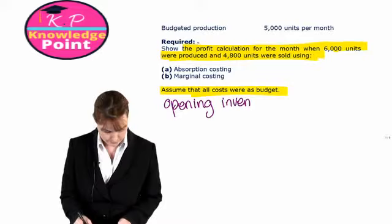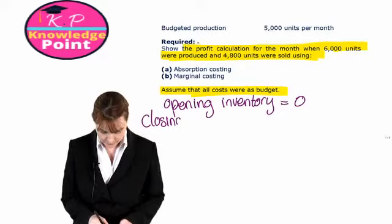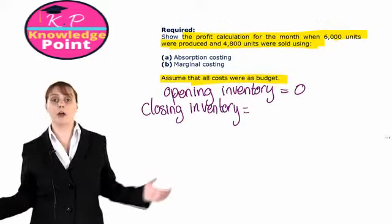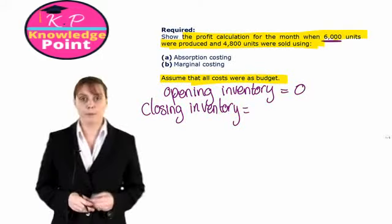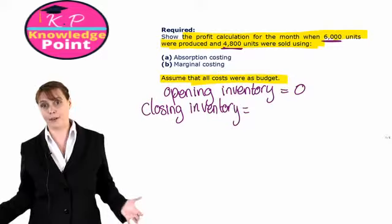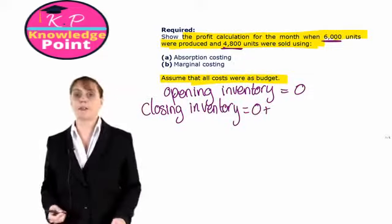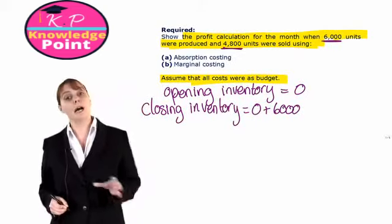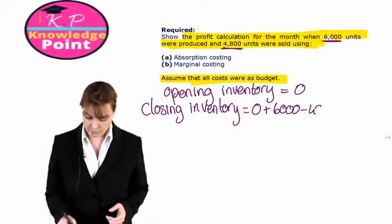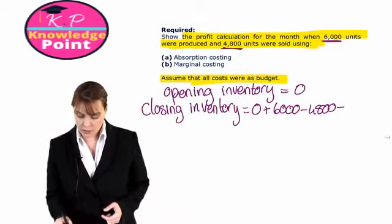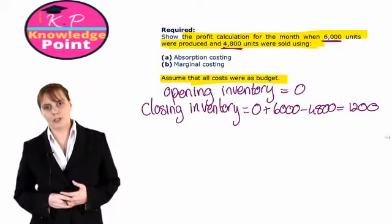Our closing inventory is calculated as opening inventory of zero, plus production of 6,000 units, minus sales of 4,800 units. So our closing inventory is 1,200 units.